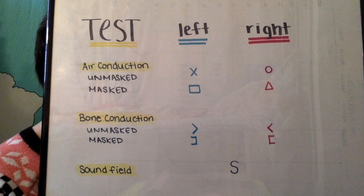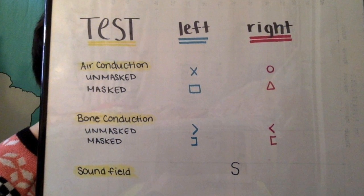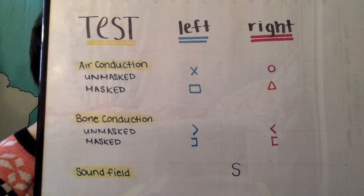One easy way to remember the symbol for the right ear for unmasked is to think right, red, and round.